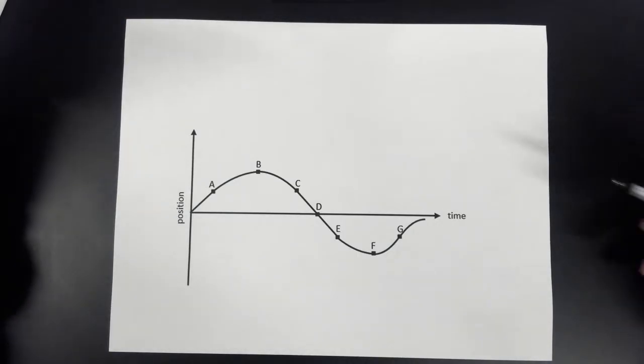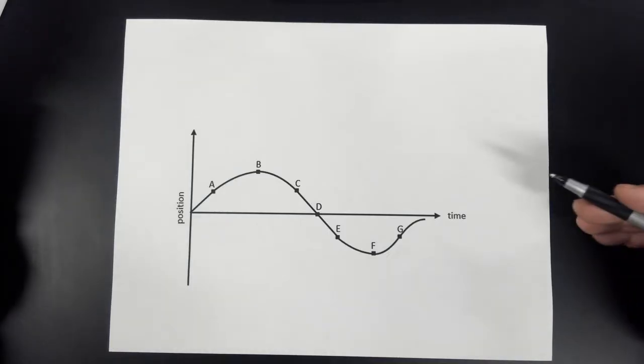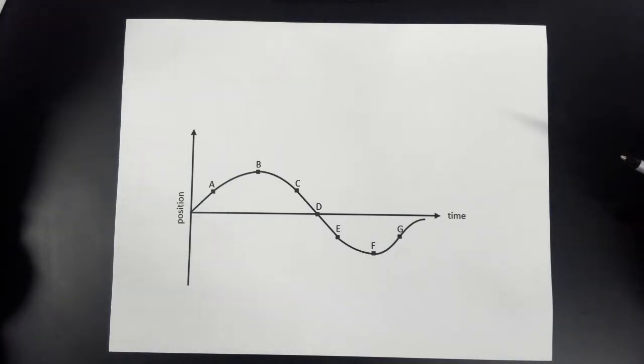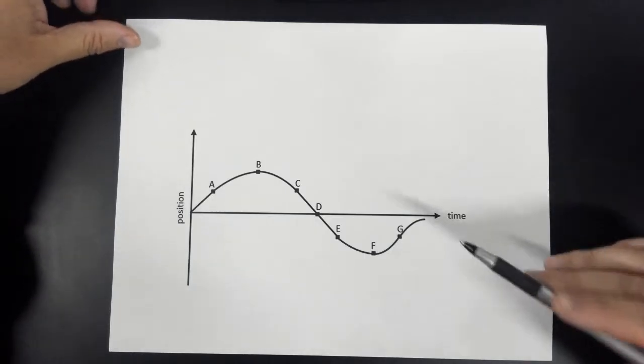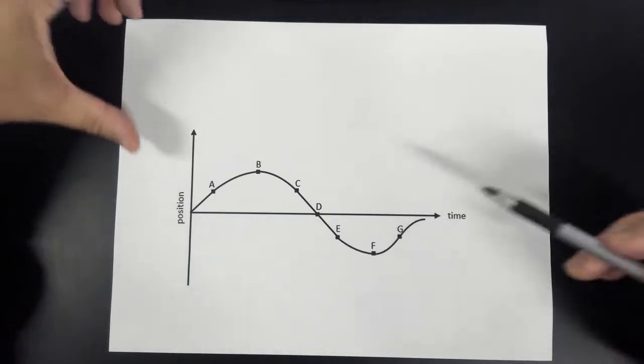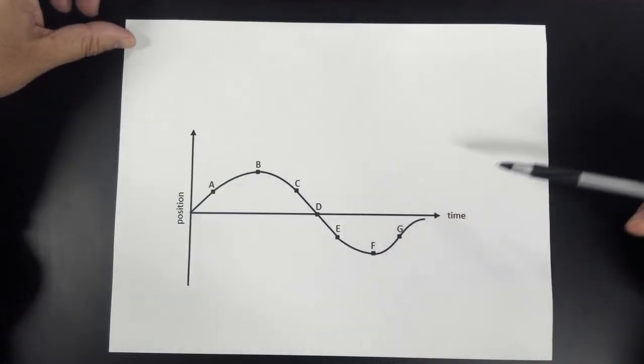What we want to see here is when this is going to be fast, when it's going to be slow, when it's going to be speeding up, when it's going to be slowing down. So how can we tell this from a position-time graph? This is some complicated motion here.